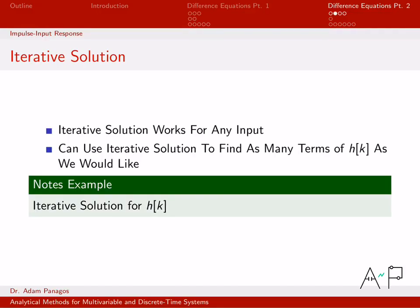Let's talk about how we might solve for the impulse response of a difference equation. One way is to use the iterative approach, which we used a few videos back to solve for the difference equation solution. That approach works for any difference equation and any input. We'll work an example solving for H of K — the impulse response — for the case where the input is an impulse. In the next video, we'll cover how to solve for the impulse response using a closed-form analytic equation.